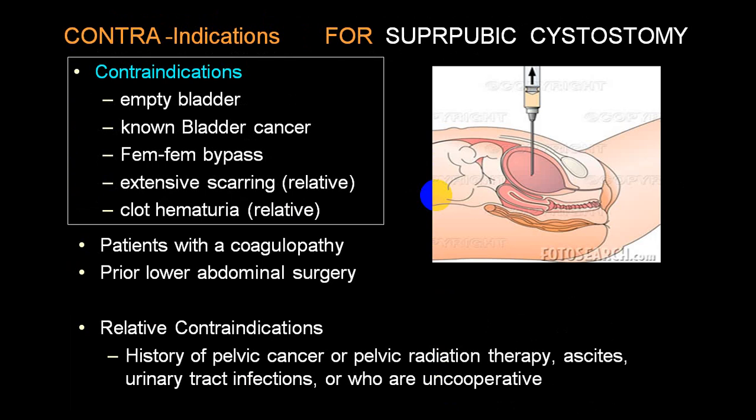Contraindications for suprapubic cystostomy include: completely empty bladder (making the procedure extremely difficult), known bladder cancer (absolute contraindication), and femoral bypass. Relative contraindications include extensive scarring, massive hematuria, coagulopathy, previous abdominal surgery, history of pelvic cancer or pelvic radiotherapy, ascites, urinary tract infection, and an uncooperative patient. You must weigh the indications against the contraindications in each case.